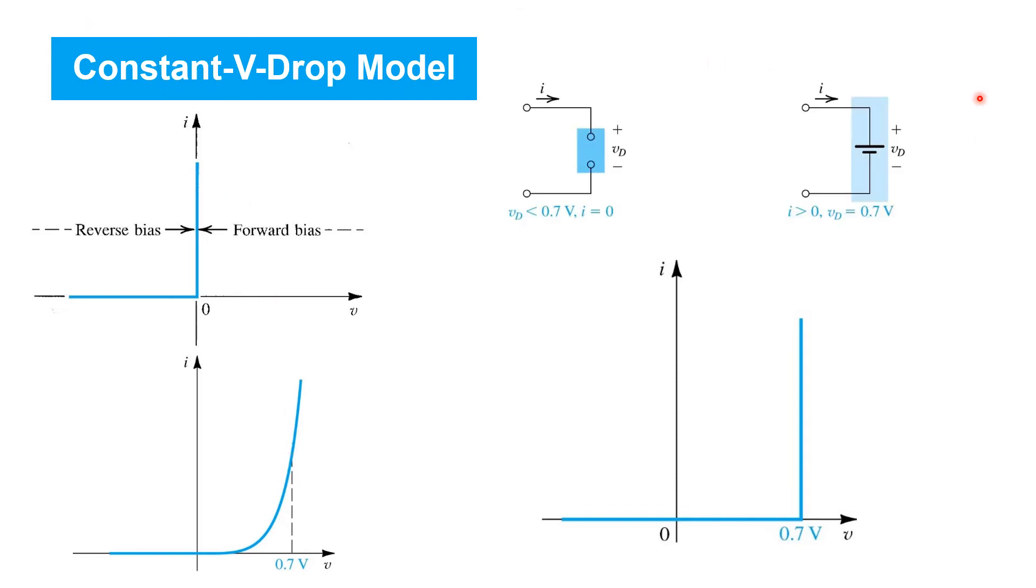So according to this constant voltage drop model, it's again like the ideal diode model - it's piecewise linear. There's one model for when we're reverse biased - that's this part of the curve here. In this region, the constant voltage drop model tells us that zero current is flowing, in which case it can be modeled by just assuming it's an open circuit.